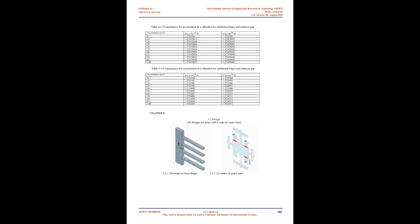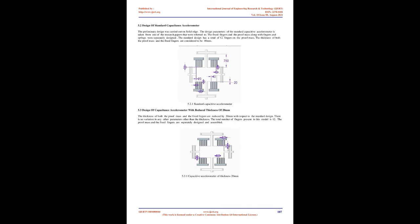This force is responsible for the proof mass to move, which results in the movement of the fingers. A differential capacitance is set up at the gaps between the fingers and the dielectric plates. This capacitance produces a voltage which is transferred to the electronic control unit of the vehicle, and if it is within the acceptable range, causes the airbag to deploy. The system can be depicted by a spring-mass-damper setup. A force F, generated by external acceleration acting on the mass M, causes a displacement X. The differential equation describing the system response is given by the governing equation.